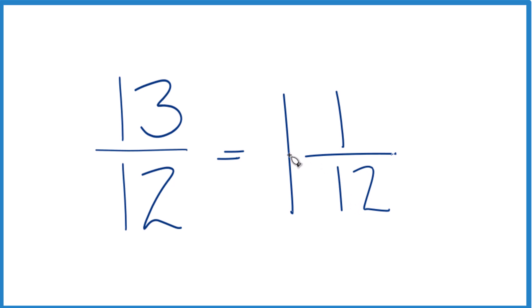And you can check that because 1 times 12, that's 12. 12 plus 1, that gives us the 13. We just keep the 12 here the same. So in answer to our question, 13 twelfths equals the mixed number 1 and 1 twelfth.